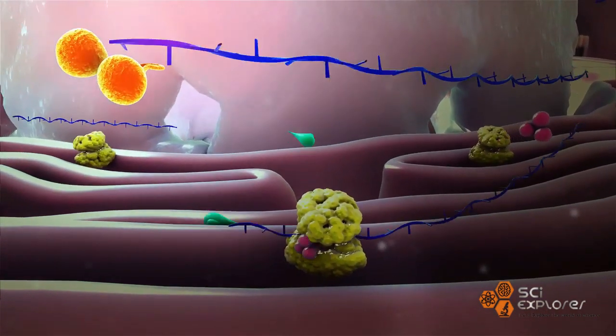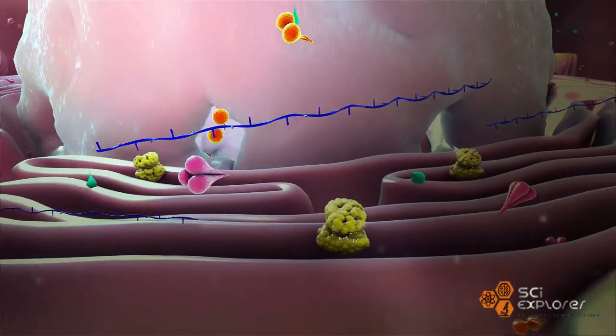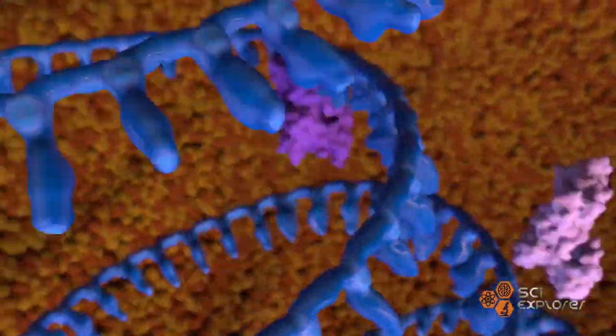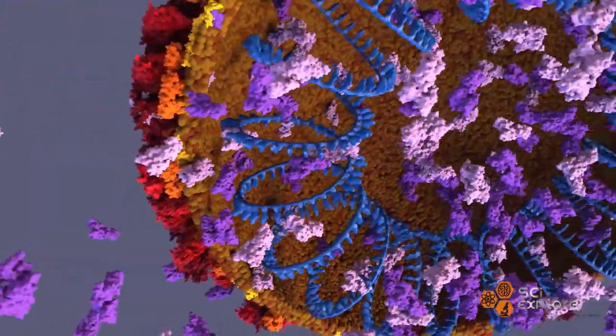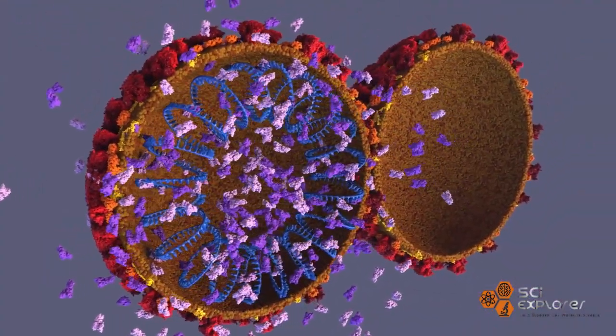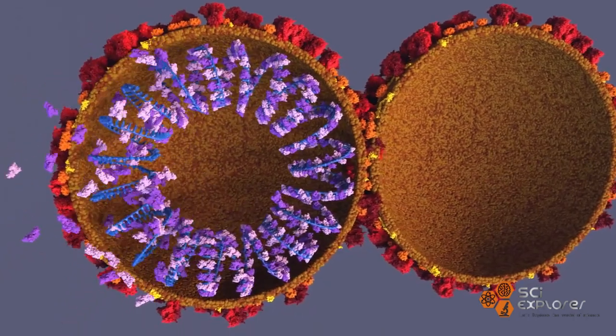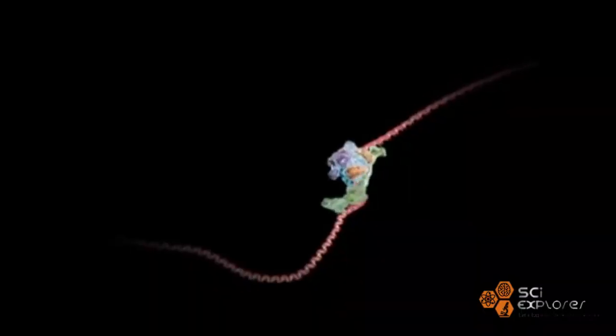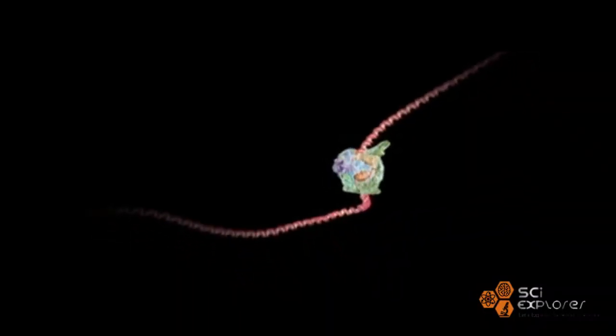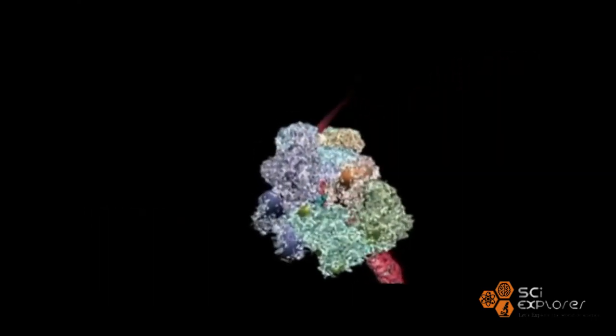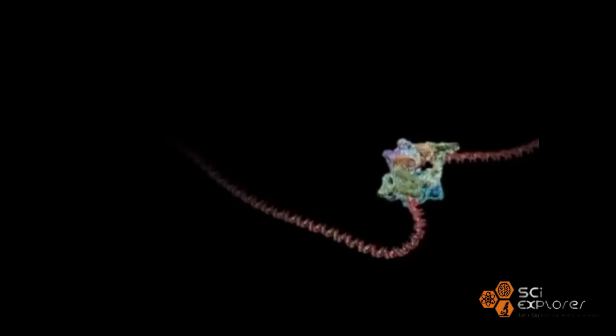After the virus shoots its RNA genome into the cell, ribosomes in the cytoplasm translate two sections of viral RNA into long strings of amino acids, which will eventually give rise to 16 proteins, including many involved in RNA synthesis.